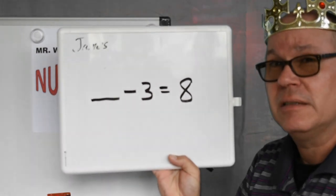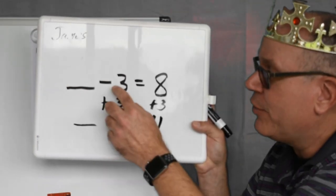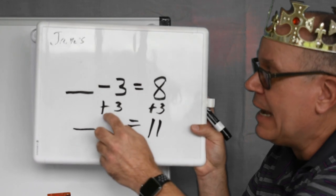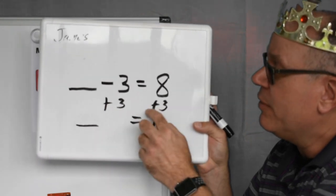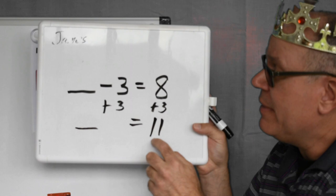How would you complete this? Let me show you. See what I did here? I added three to each side because this is a minus three, so I add three. And I add three here to eight and that makes eleven.